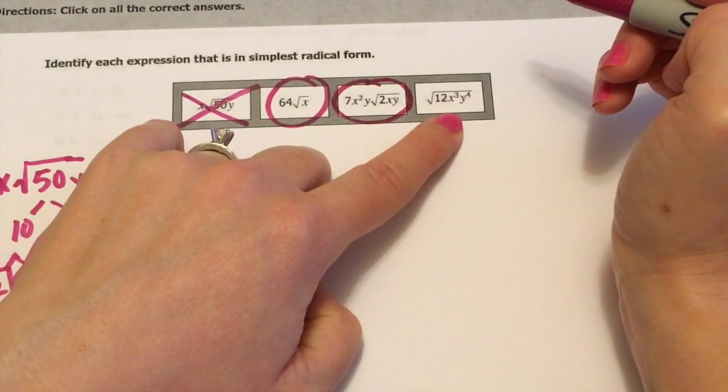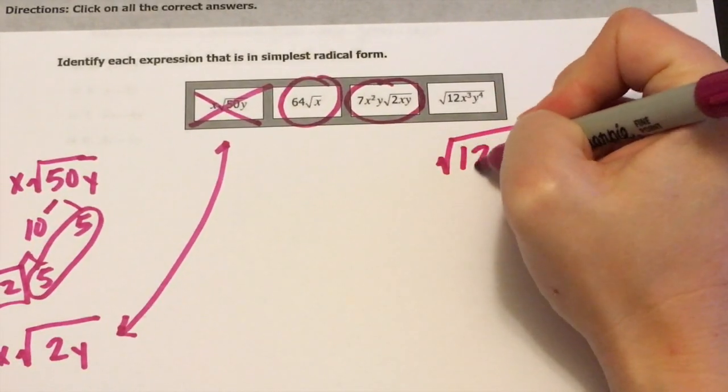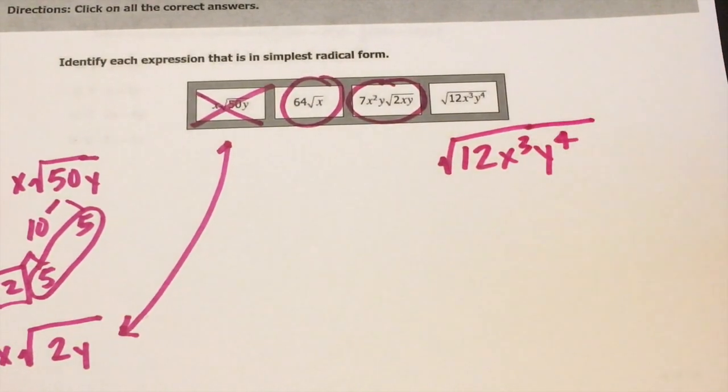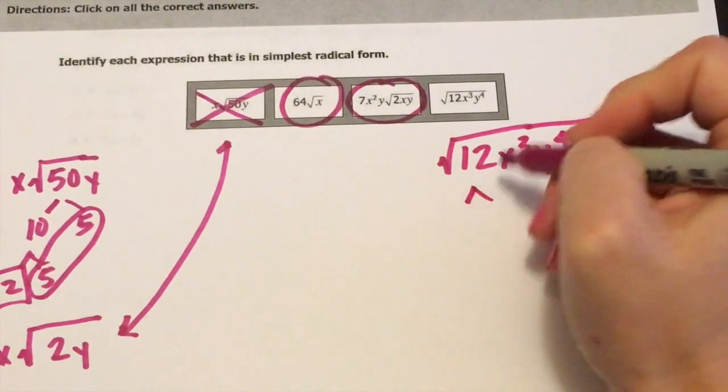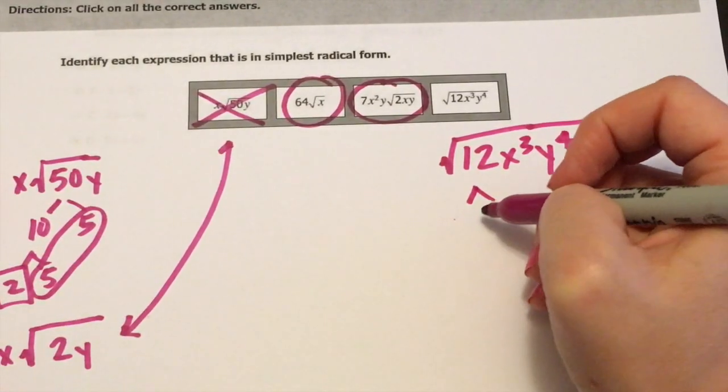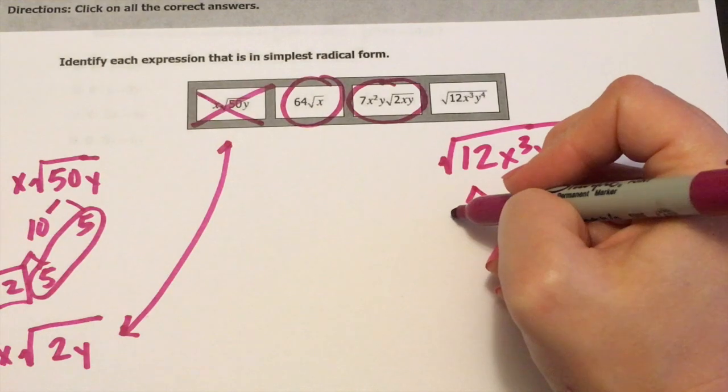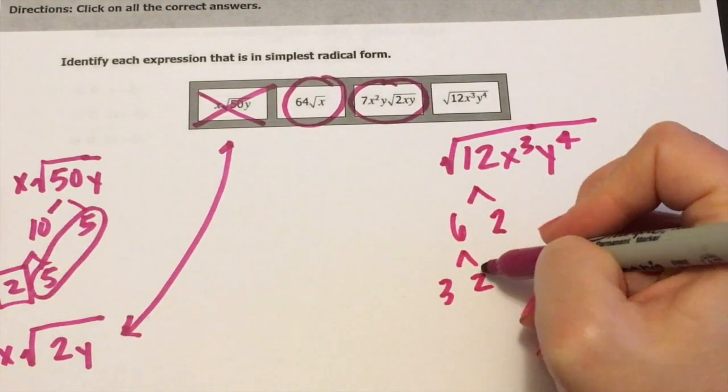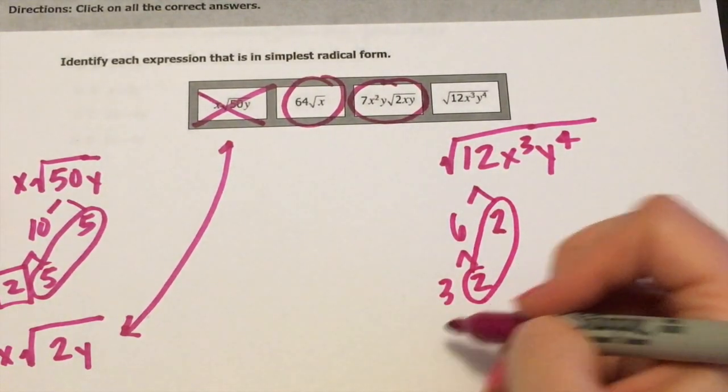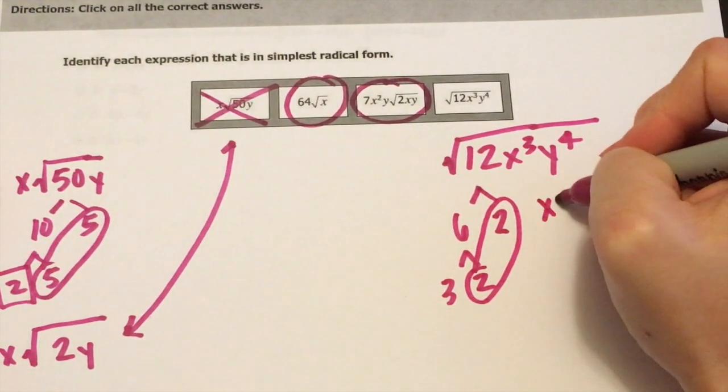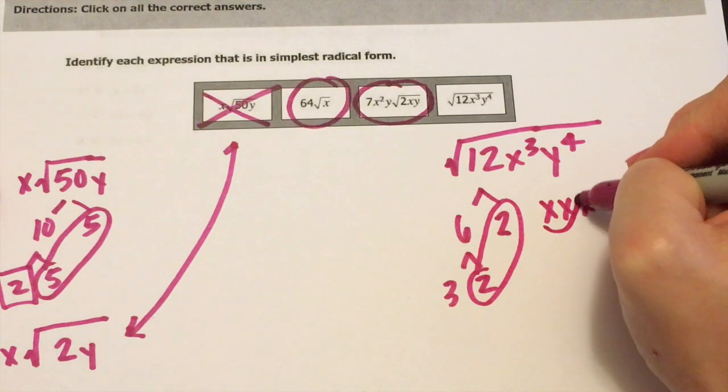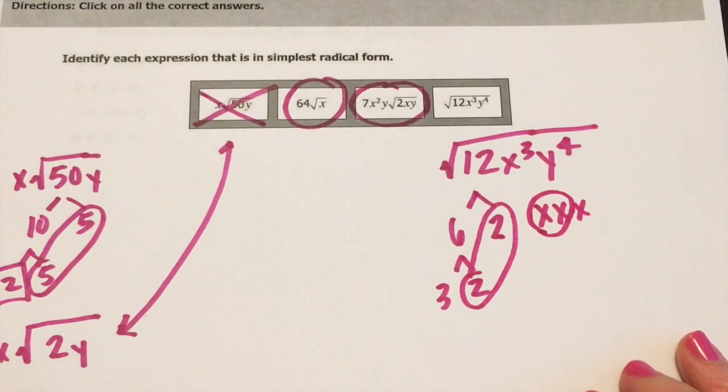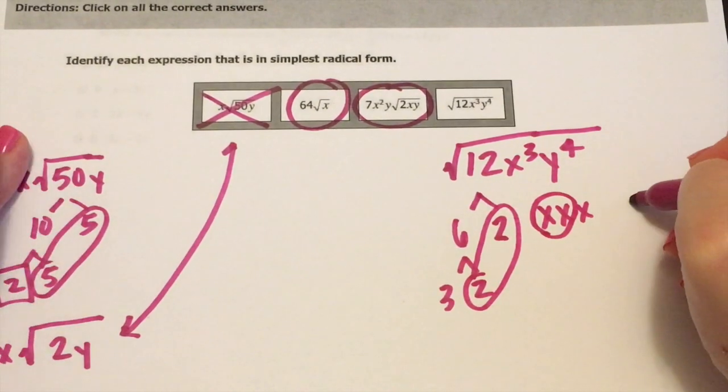And again, let's look here at 12. Let's take a look at the 12. You can use any factors of 12. Let's just use six times two. And that's three and two. So we can take out that two. We have three x's there. We have a pair of them. So that is going to be three. That can come out. And then look at all these y's.